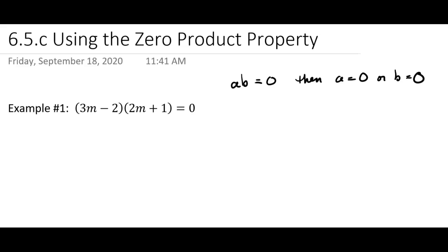A lot of times we're going to get two solutions. You'll notice that we have multiplication here—a binomial times a binomial and it equals zero. You can think of this as like the a and this is like the b.